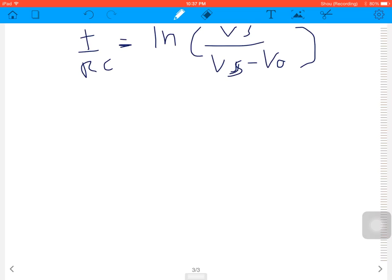Next, we move log to the opposite side: e to the power of t divided by RC equals VS over VS minus V out, like this.